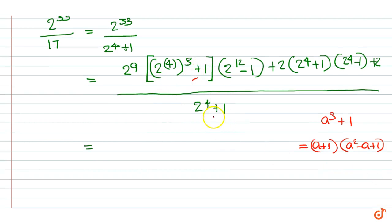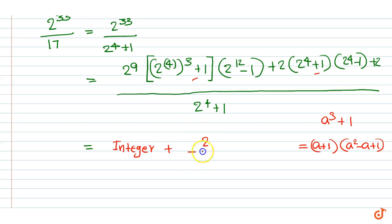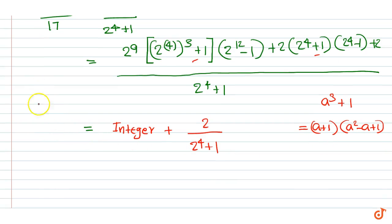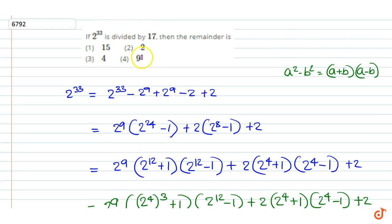Therefore this quantity is divisible by 2 to the power 4 plus 1, and this is also divisible by 2 to the power 4 plus 1, so it can be written as an integer plus 2 to the power 4 plus 1. Therefore the remainder when 2 to the power 33 is divided by 17 equals 2. That is our answer, so the correct option is option 2.